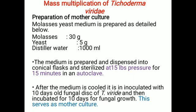For example, Trichoderma viridi, Bacillus subtilis, and Pseudomonas fluorescens — they are available in soil but not in enough amount. So we need to multiply the biocontrol agents to meet the demand of farmers with the help of suitable laboratory techniques, because Trichoderma viridi, Bacillus subtilis, and Pseudomonas fluorescens control different soil-borne diseases.